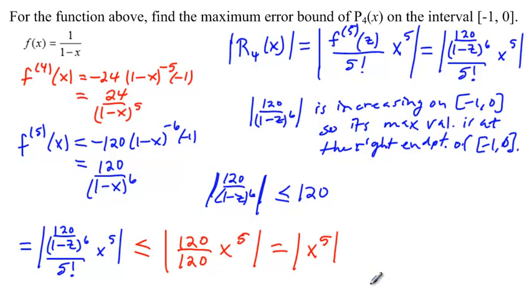Now, we're being asked here for something more. We're being asked for the maximum error bound for this function, this polynomial, fourth degree Taylor polynomial, on the interval from negative 1 to 0. So, we've got to think about where does x to the 5th, or actually, not just x to the 5th.